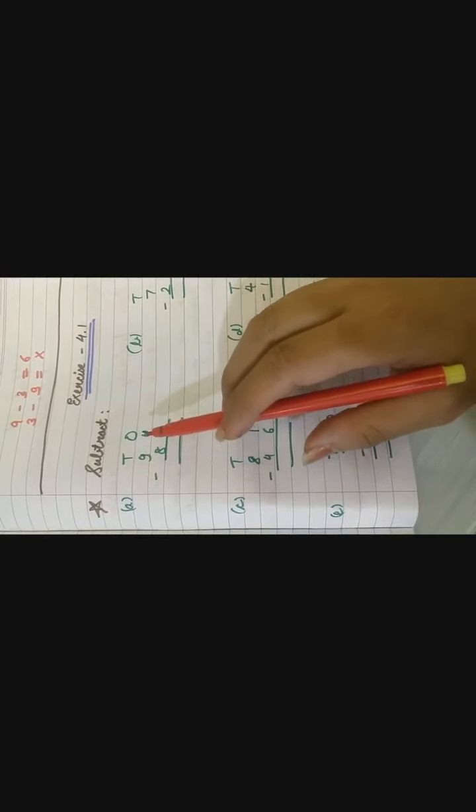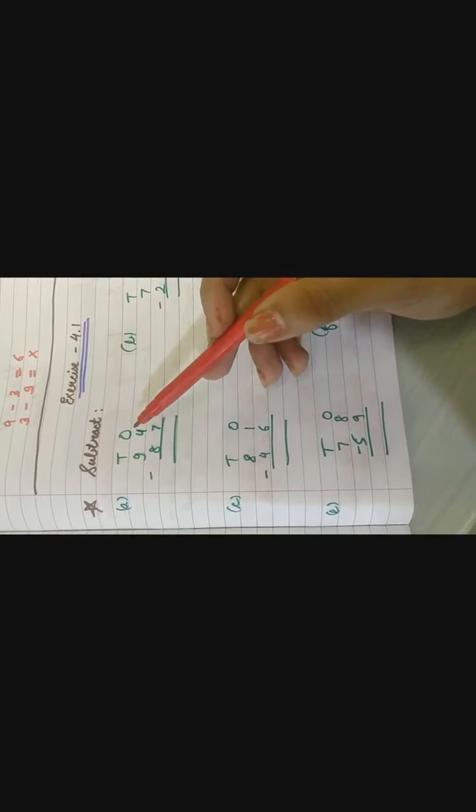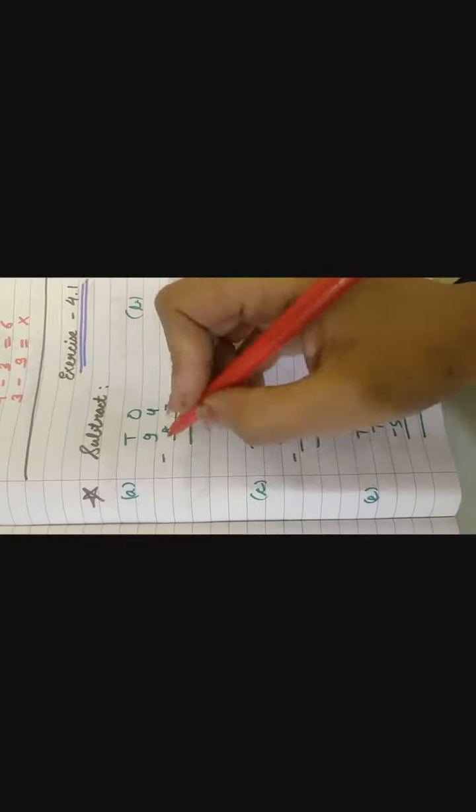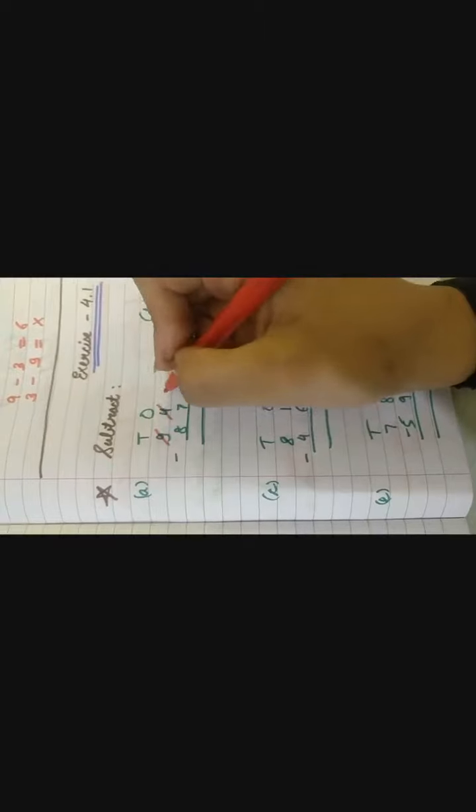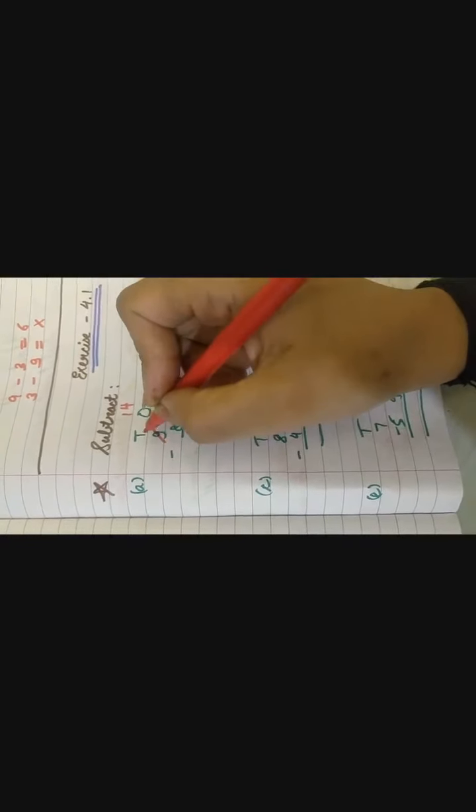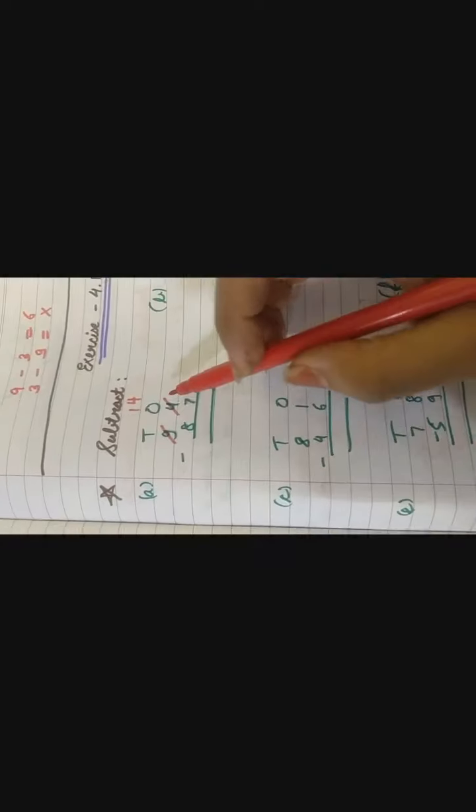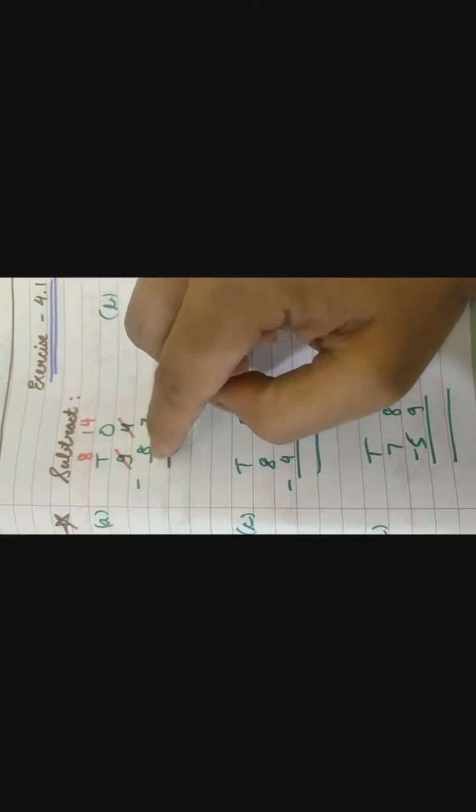So 1's place, 10's place. The number is 94 minus 87. Can you subtract 4 from 7? No. If you have 4 things, can you give 7 things to someone? No. Then what you need to do? You will borrow. So what will you do? You will borrow. 9 se, one number le lenge. To yaha kya ho jayega? 14. And when you have 9 things, if you borrow one, 9 ke pas ab ek number kam ho gaya. To 9 ke pas kya bacha? 8. So we have to do 14 minus 7, 8 minus 8. So let's start.